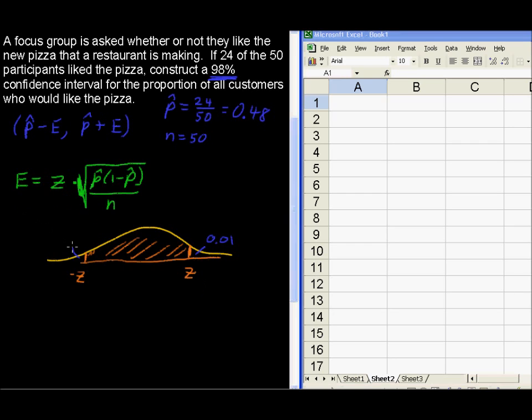Or, right, and 0.01 on the other side. Or, you could say that this value z has an area of 0.99 to its left. And this is what we're going to use for Excel. 0.99 area to the left of this z-score.